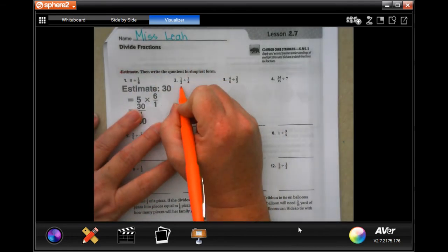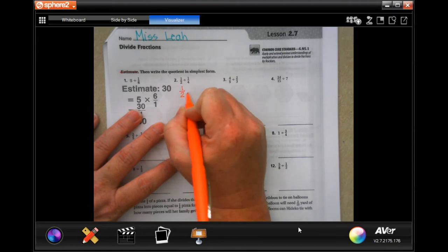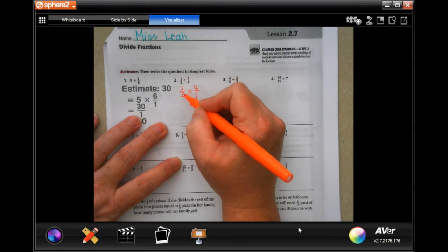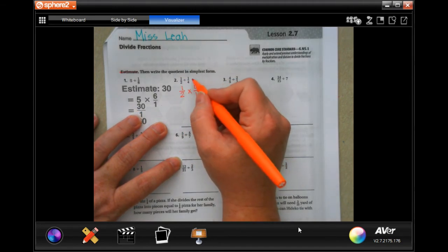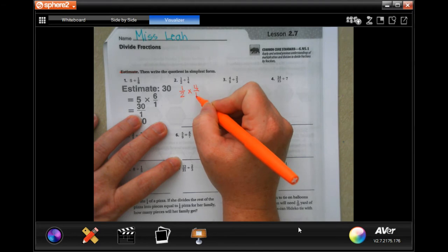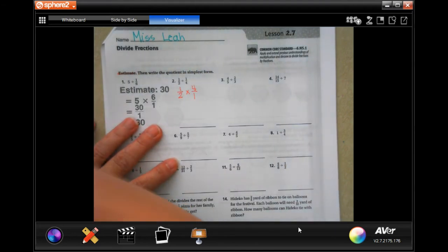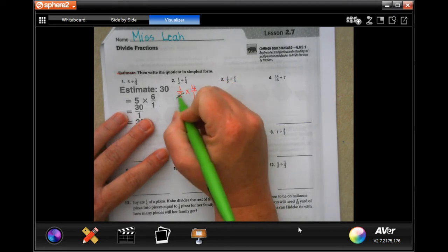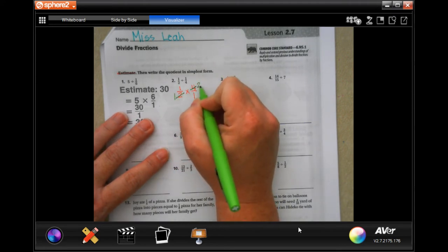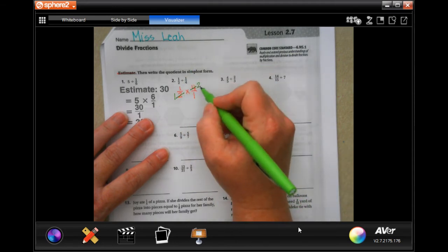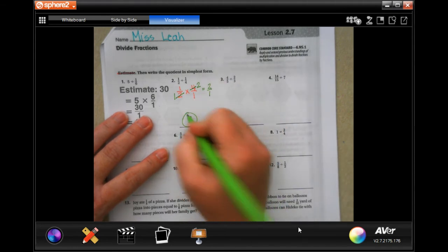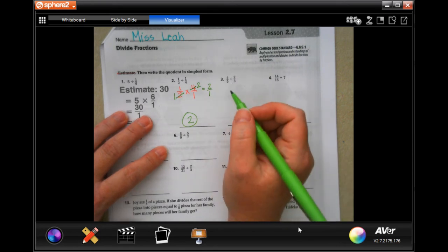So when we are dividing fractions, we keep, we change the sign, and then we flip. So I keep the 1 half, I change the divide to multiply, and then I flip the 1 over 4 to 4 over 1. Now I can go through and I can say that 2 goes into 4 two times. So 2 goes into 2 once, 2 goes into 4 twice. Now when I multiply straight across, I get 1 times 2 is 2, 1 times 1 is 1, so my answer is going to be 2, because 2 over 1 is equal to 2.